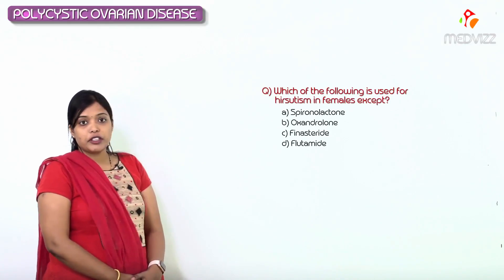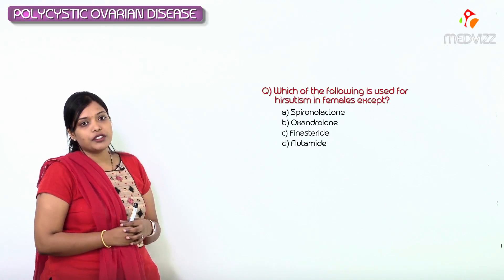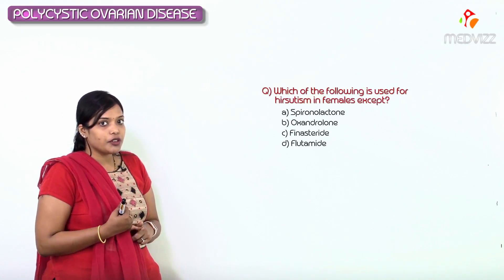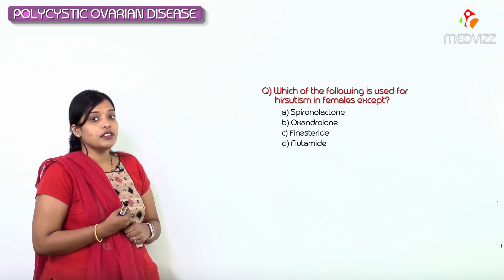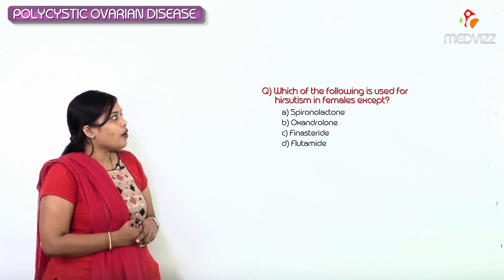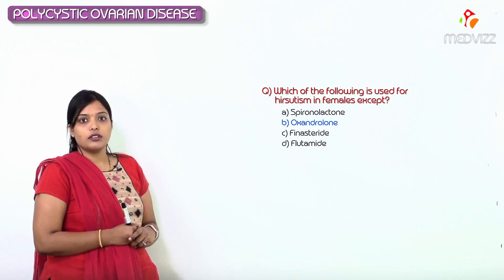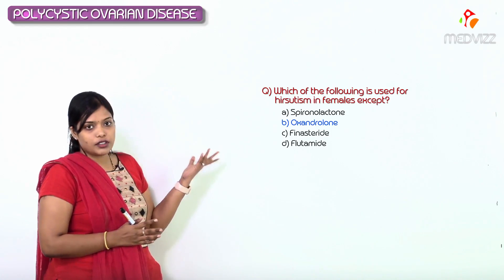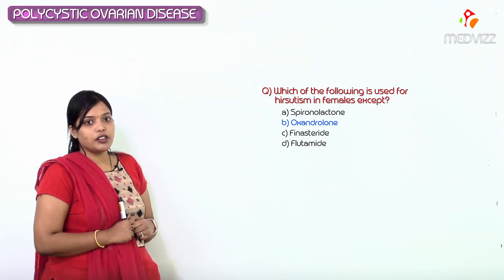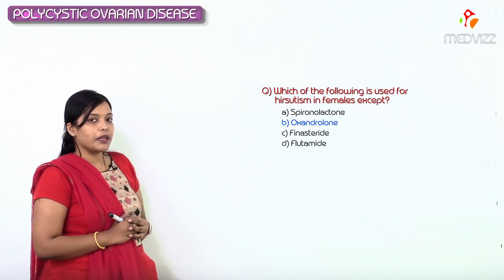Going back to the opening question: Which is used for hirsutism except? Spironolactone — yes, we use it, it's an anti-androgen and potassium-sparing diuretic. Oxandrolone — we never discussed this, so it's the answer. Finasteride — yes, 5-alpha reductase inhibitor. Flutamide — yes, androgen receptor blocker. So the answer is B — Oxandrolone.